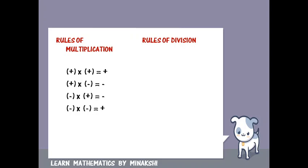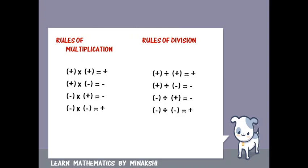Then the rules of division. When plus sign is divided by plus sign it will give plus sign. When plus sign is divided by minus sign it will give minus sign. When minus sign is divided by plus sign it will give minus sign. When minus sign is divided by minus sign it will give plus sign.